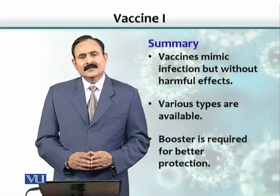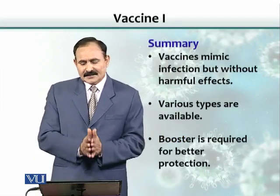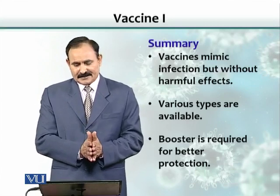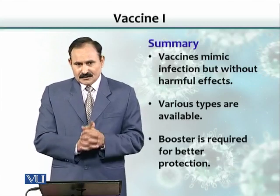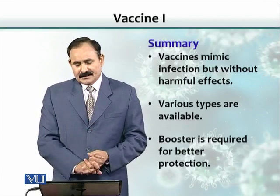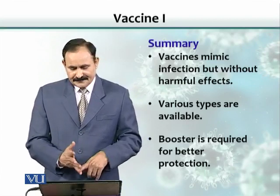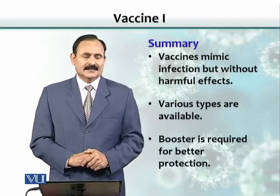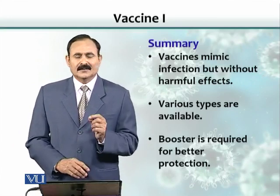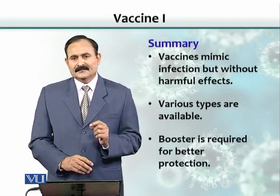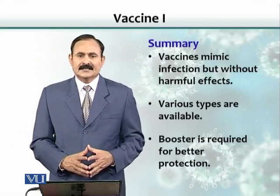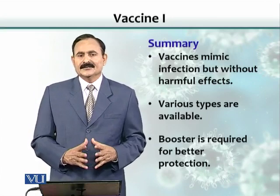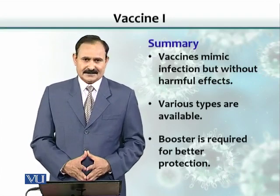In summary, vaccines basically mimic or copy infection without causing an infection. There are two types of vaccines — killed and live. Boosters are required for all of them, although the number of boosters needed with live vaccines is much less than with killed vaccines.